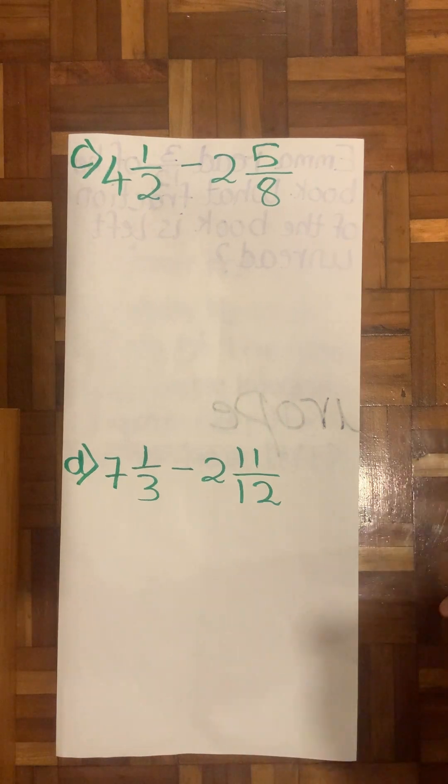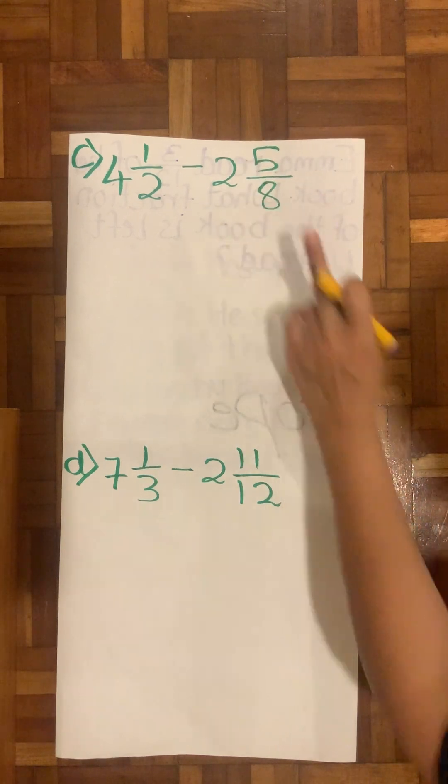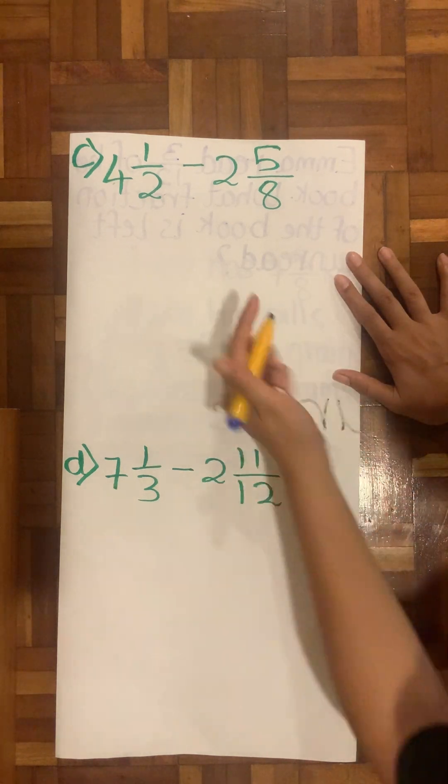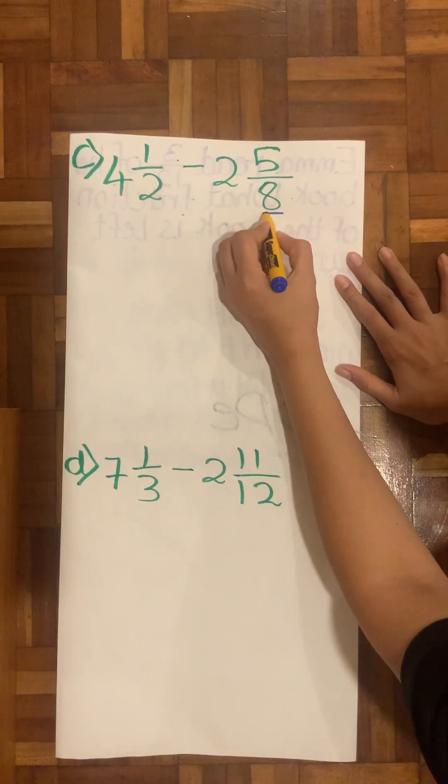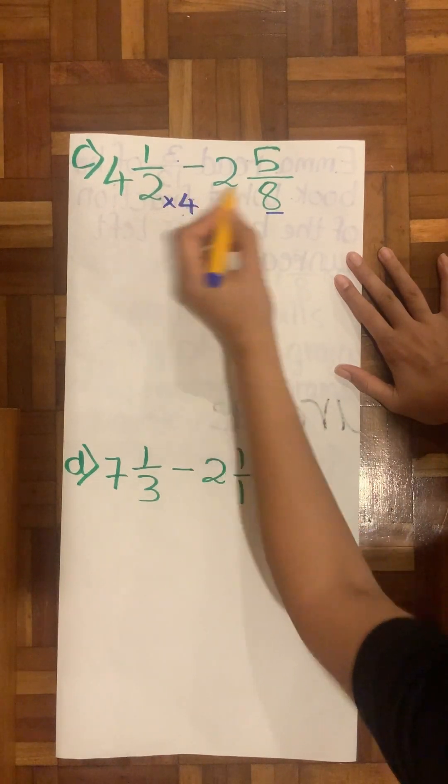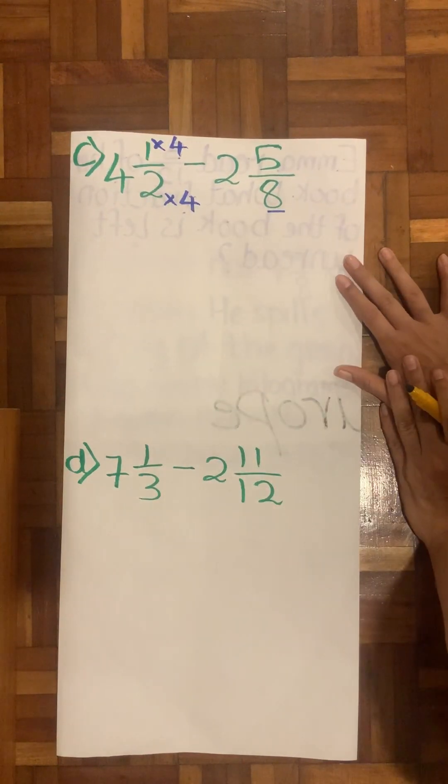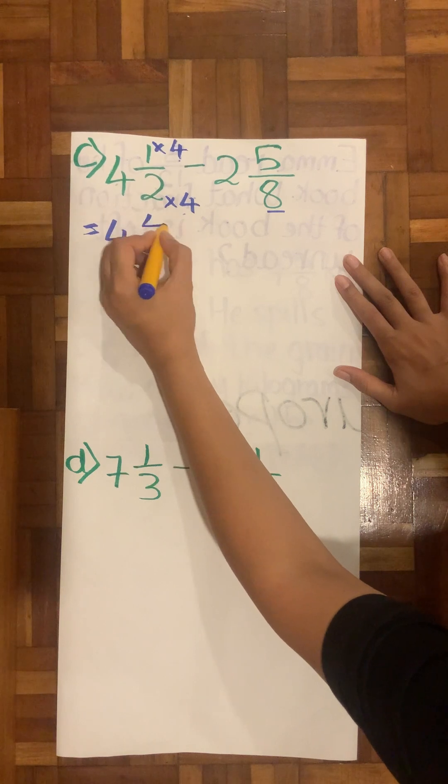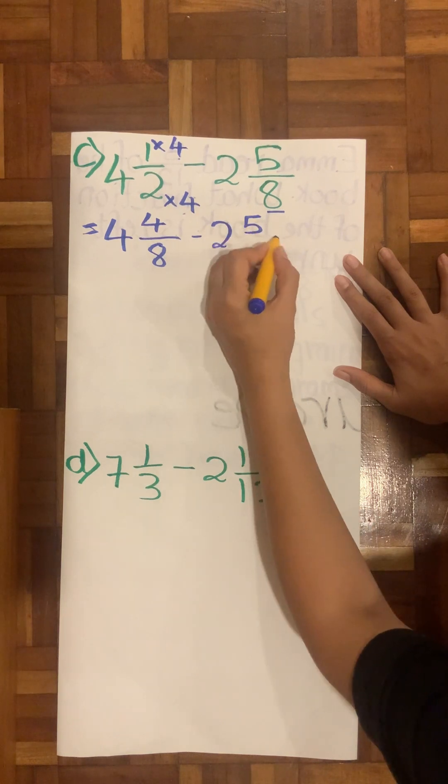Let's look into the third question. The third question says 4½ minus 2⁵⁄₈. Here we are going to give a keen eye. I have my wholes as 4 and 2. My denominator, the first thing I will suffice is my denominator. So 2 times 4 is 8. Now I have met the need. Same number I multiply up as well. So 4⁴⁄₈ minus 2⁵⁄₈.